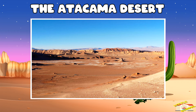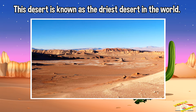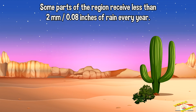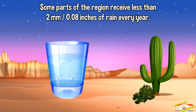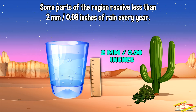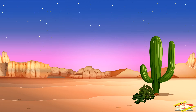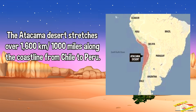The Atacama Desert. This desert is known as the driest desert in the world. Some parts of the region receive less than two millimeters or 0.08 inches of rain every year. The Atacama Desert stretches over 1,600 kilometers or 1,000 miles along the coastline from Chile to Peru.